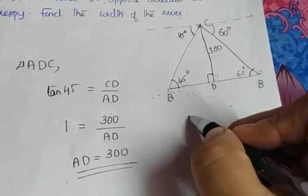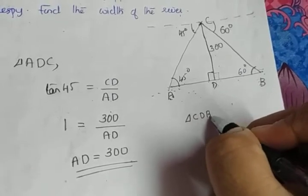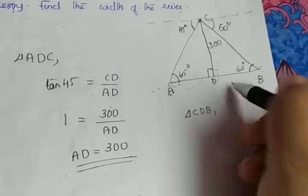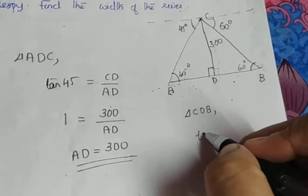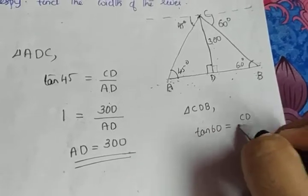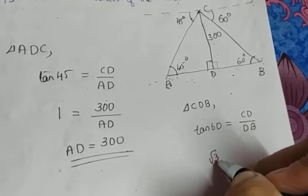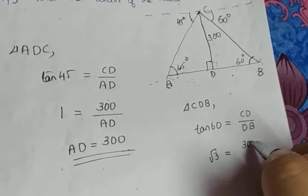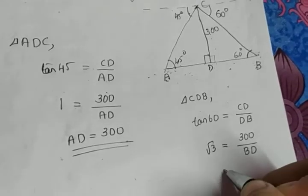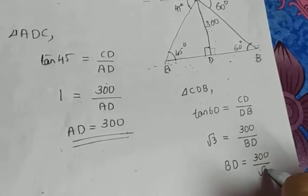Now taking the next triangle, triangle CDB. From that triangle, we know the opposite side CD. We need to find DB. So tan 60 = CD / DB, meaning root 3 = 300 / BD. Therefore BD = 300 divided by root 3.